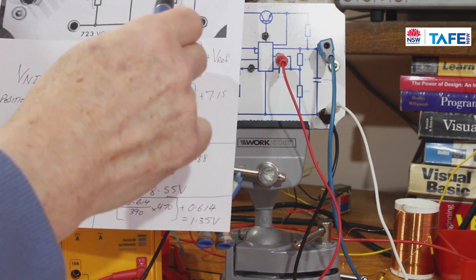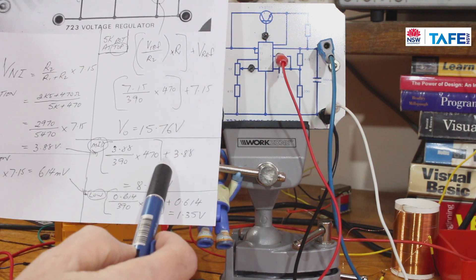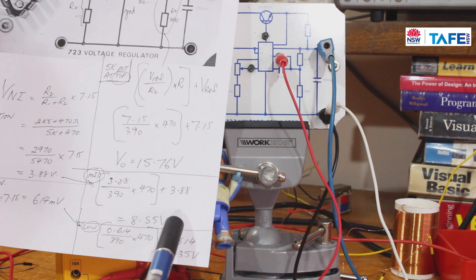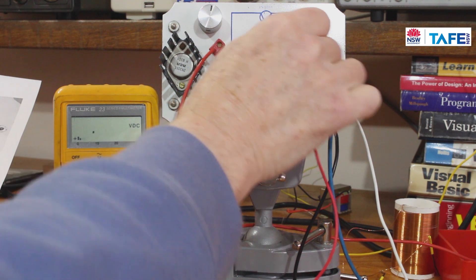Now the mathematics based on the mid position: 3.88 divided by the 390 ohms to give me the current going through that, multiply that current by the 470 ohms, and then add it to the 3.88 volts that we know that we've got there. We should have 8.55 volts at the output. All right, let's have a quick look at the output.